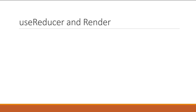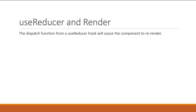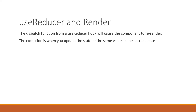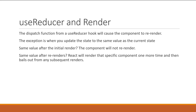To summarize: the dispatch function from a useReducer hook will cause the component to re-render. However, the exception is when you update the state to the same value as the current value. If you're updating to the same value after the initial render, the component will not re-render. If you're updating to the same value after re-renders, React will render that specific component one more time and then bail out from any subsequent renders. In the next video, let's talk about render and state immutability.